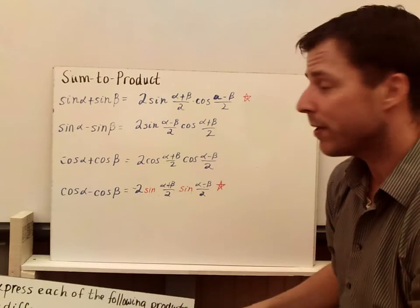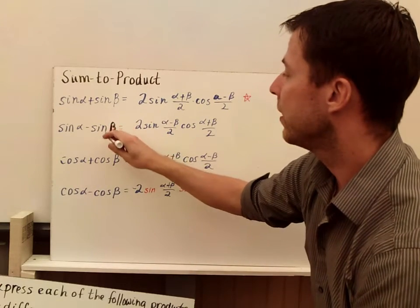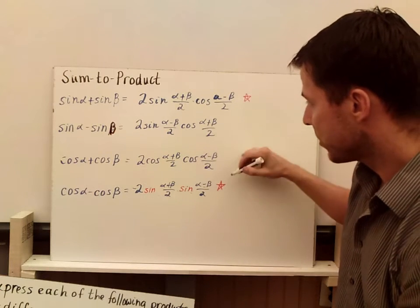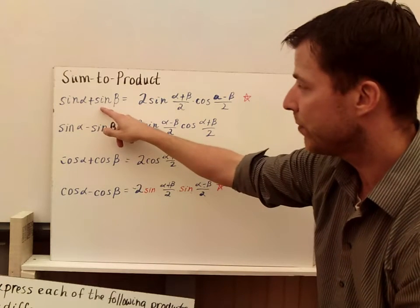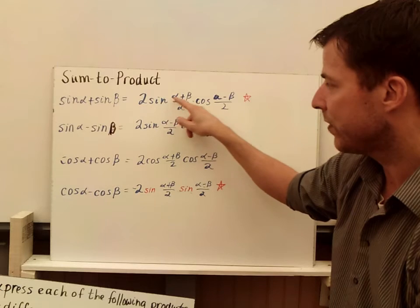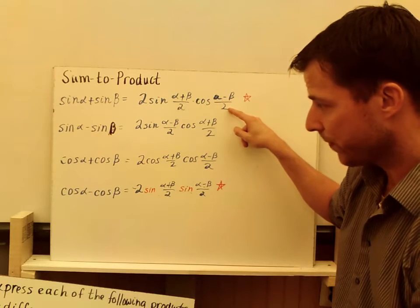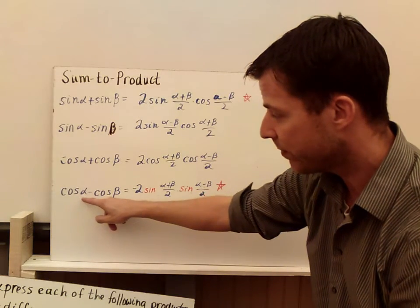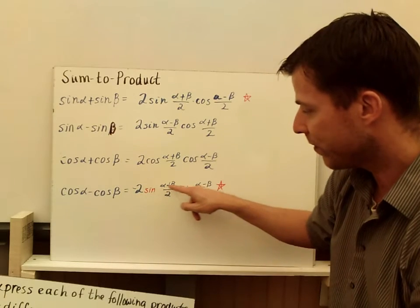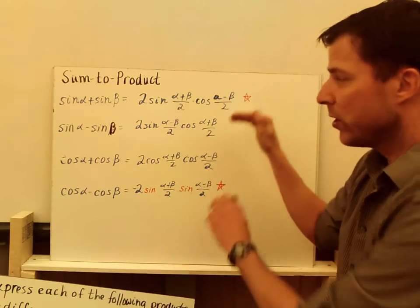Now, here's the sum to product rules. There's not much to this. There are four here. Again, if you look, I star only two of them. So I have sine alpha plus sine beta - that's the same as 2 sine of alpha plus beta over 2 times the cosine of alpha minus beta over 2. My fourth one I used - cosine alpha minus cosine beta equals negative 2 sine alpha plus beta over 2 times sine of alpha minus beta over 2. So I'm only using these two.